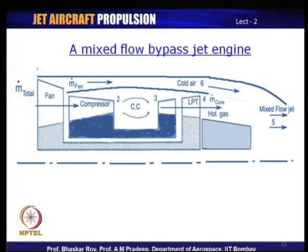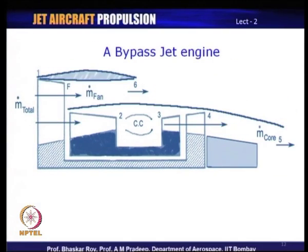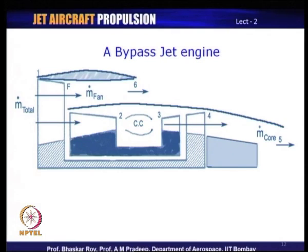Mixed flow engines are normally used in military aircraft, whereas the unmixed flow bypass engine — where cold and hot jets remain separate — is typically used in various kinds of transport or passenger aircraft. These are the two fundamental variants of turbofan bypass engine used in aircraft all over the world.